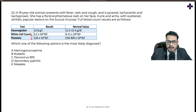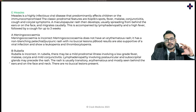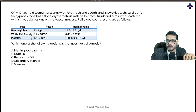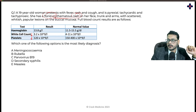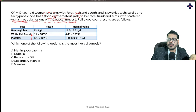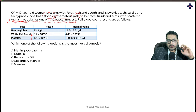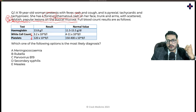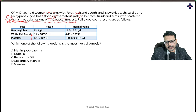The answer is measles. In infectious diseases, you need to understand why the other answers are wrong too. The key here is whitish papular lesions on the buccal mucosa — these are Koplik spots, a characteristic finding. When you read this in a question, you cannot go wrong. Measles questions usually feature young patients, typically 14 to 25 years of age.